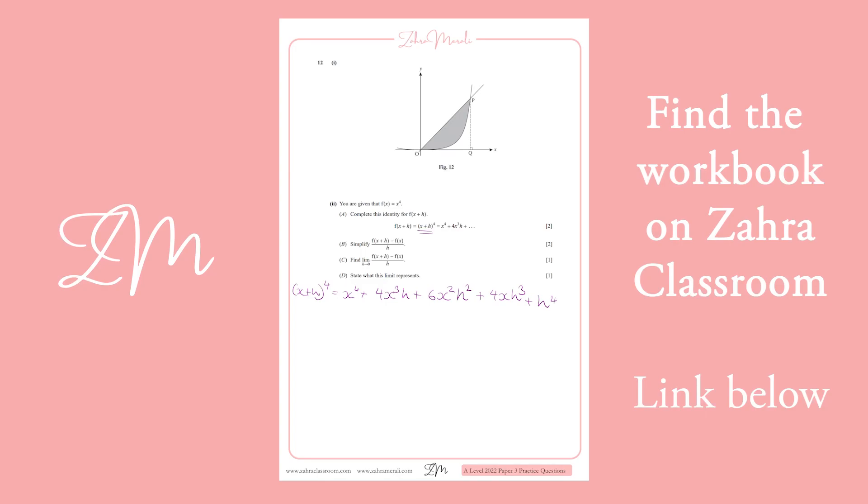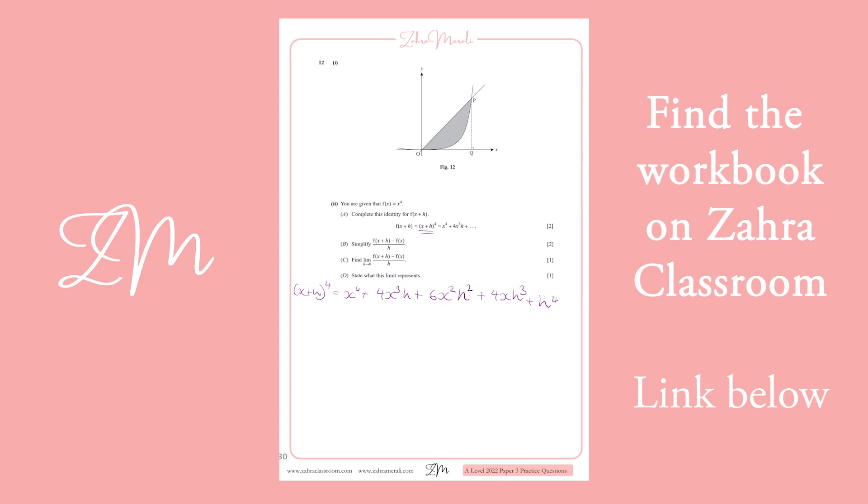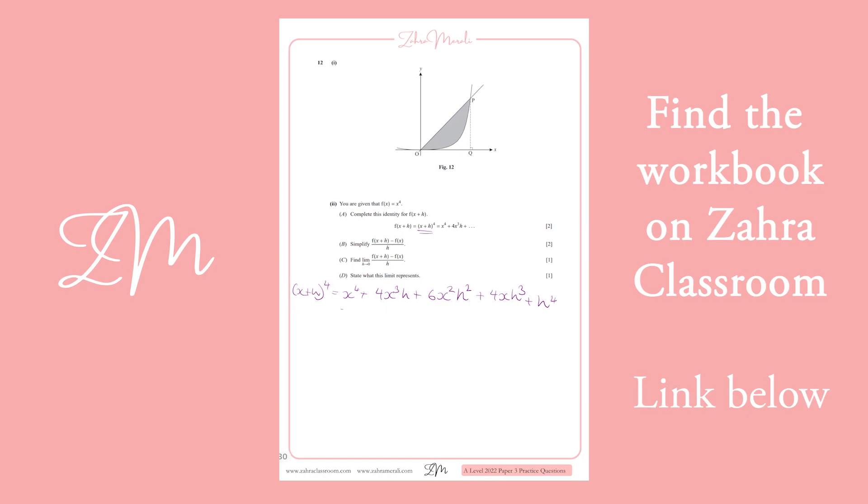And the formula that we use to do that is from our binomial expansion, where we have a plus b to the n. Then we're told we've got fx plus h, and we're minusing fx divided by h. So, now we're just doing it step by step, simplifying it.